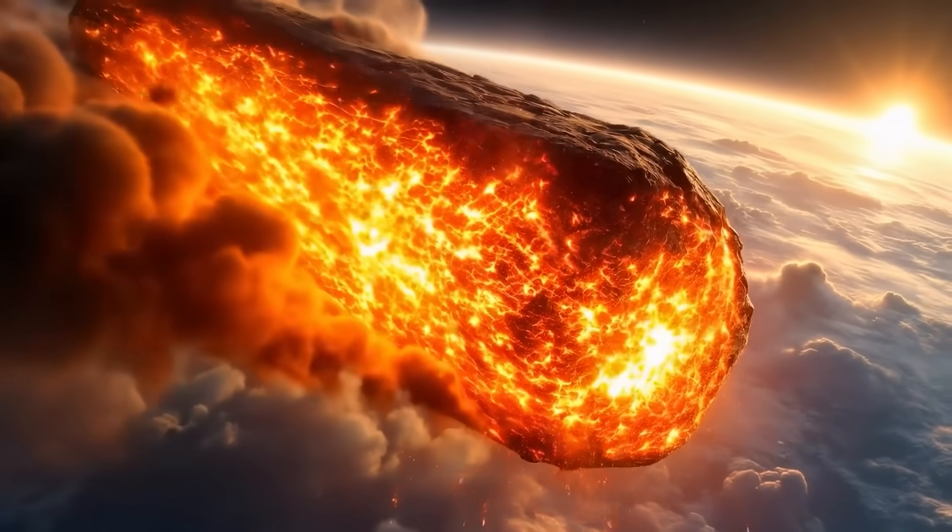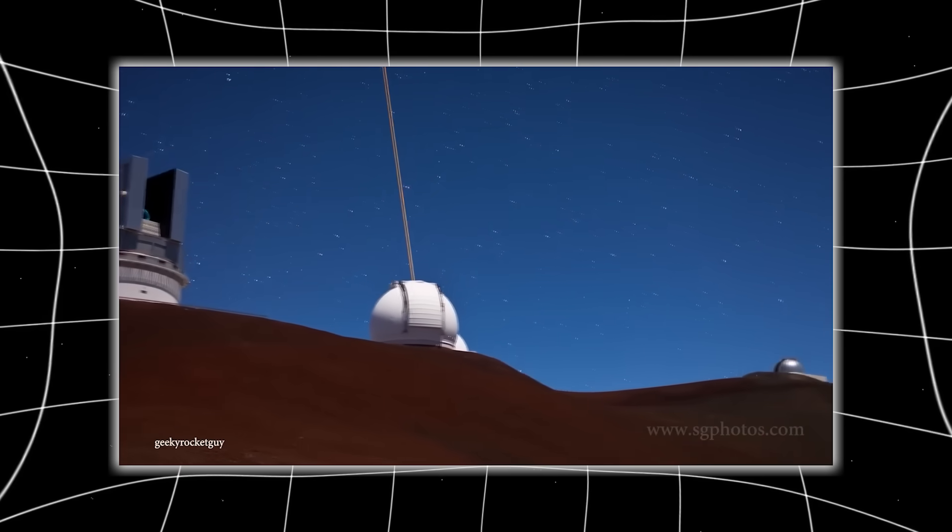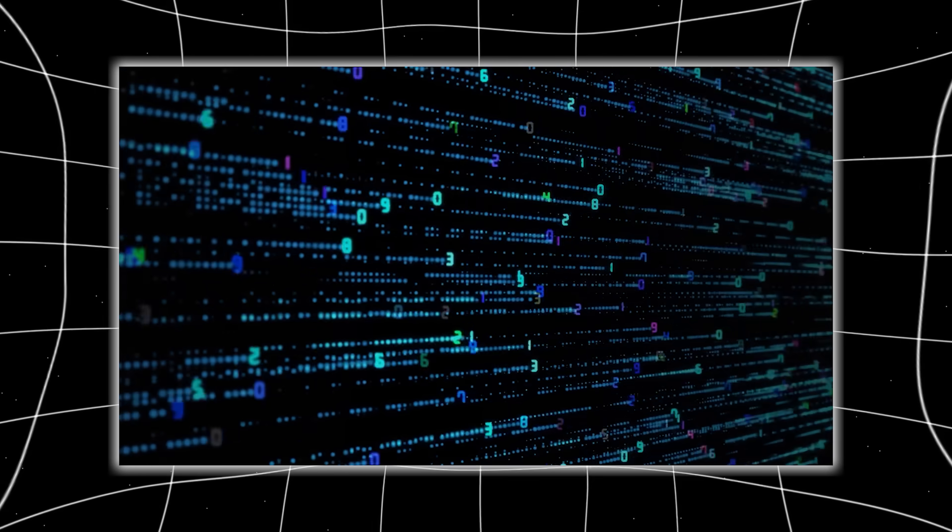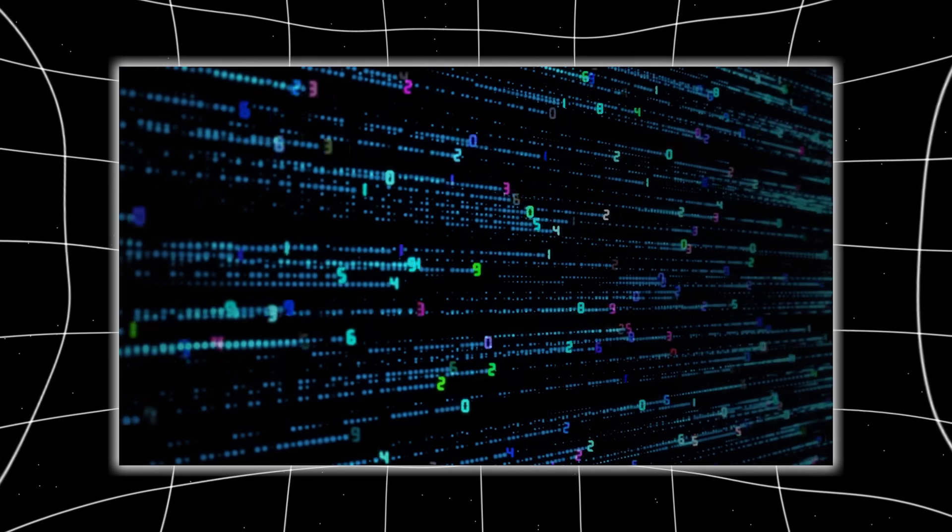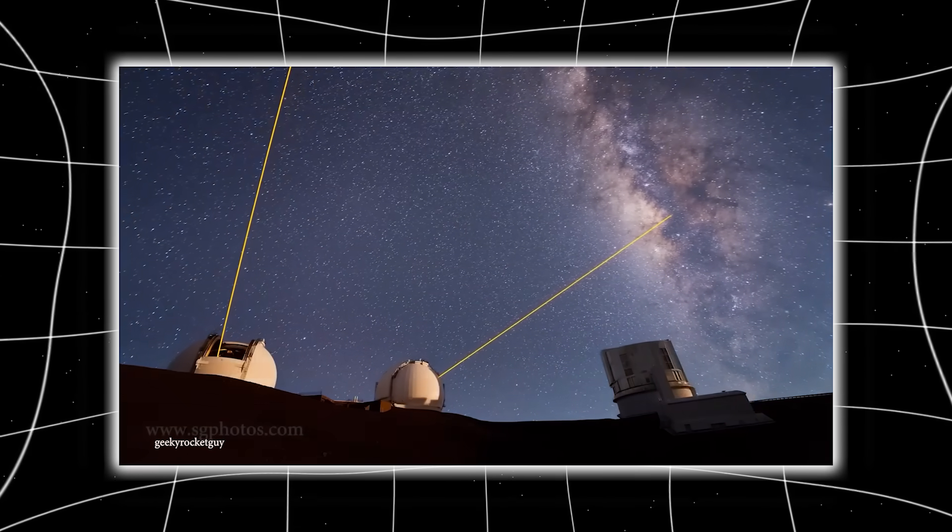Then came the most disturbing discovery of all. The IAWN command center in Vienna received a priority transmission marked Level Omega. It contained a partial data stream reconstructed from the blackout window, the missing 47 minutes when all observatories went silent.